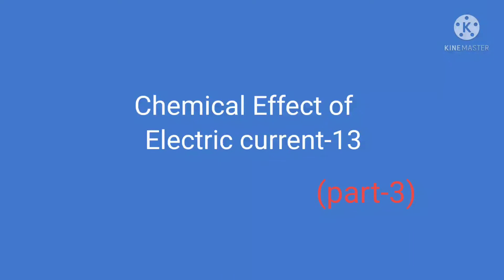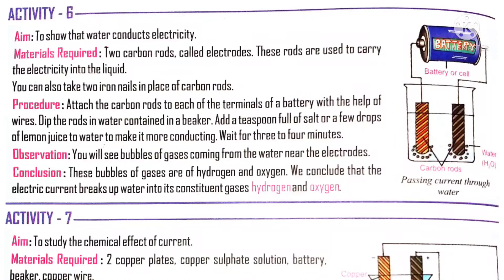Let us go on to chapter chemical effect of electric current, part 3. We have been discussing about the effects of electric current — heating effect, chemical effect, magnetic effect, etc. Today in this session we are going to discuss about the chemical effect of electric current. In order to learn this, we are going to do activity 6.